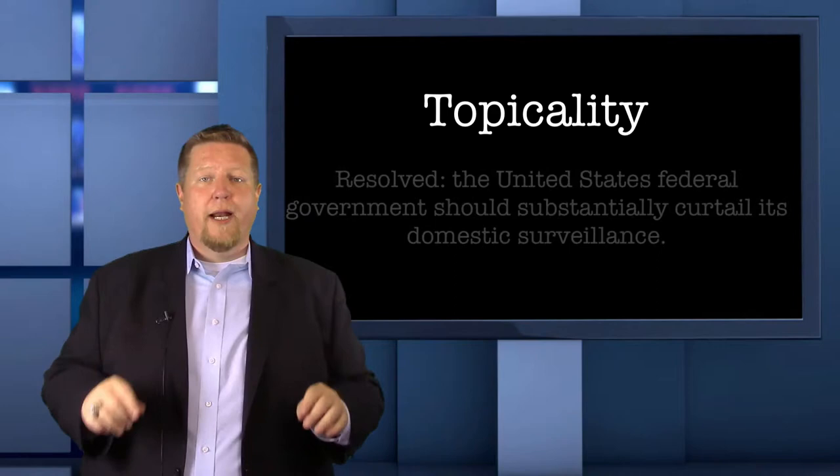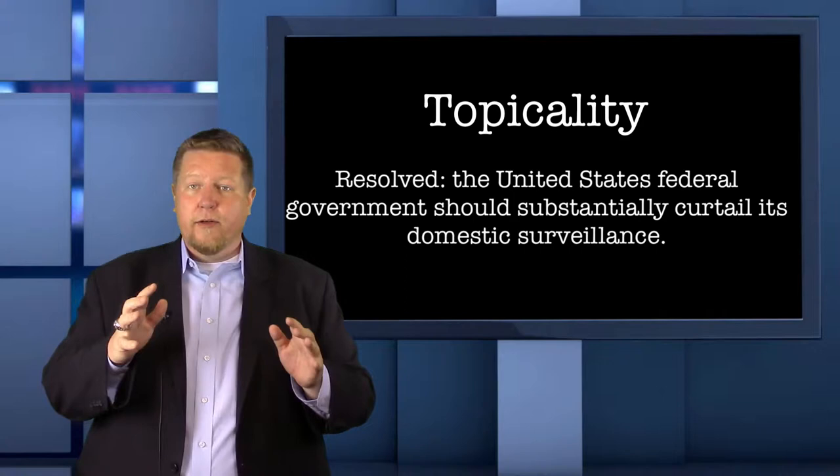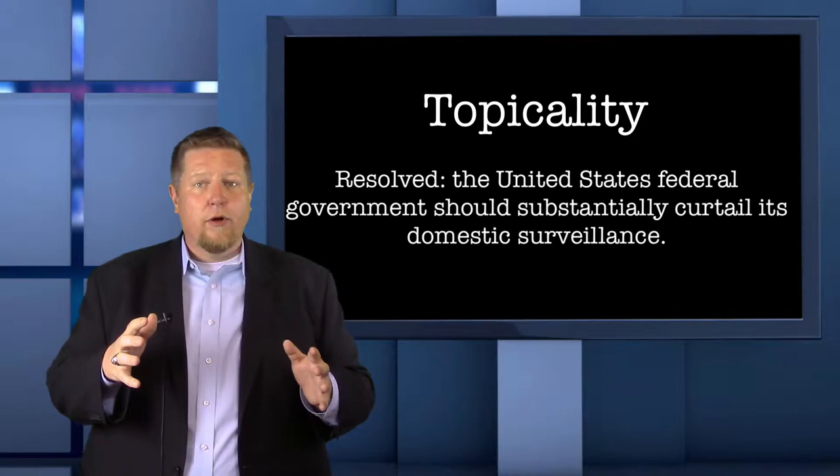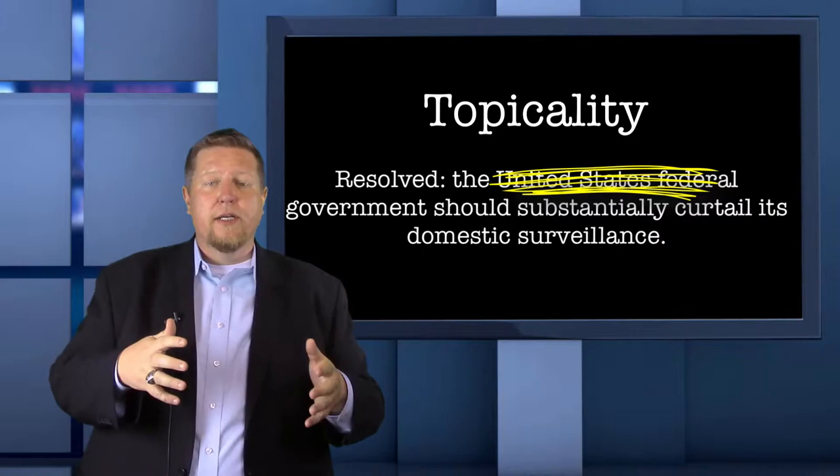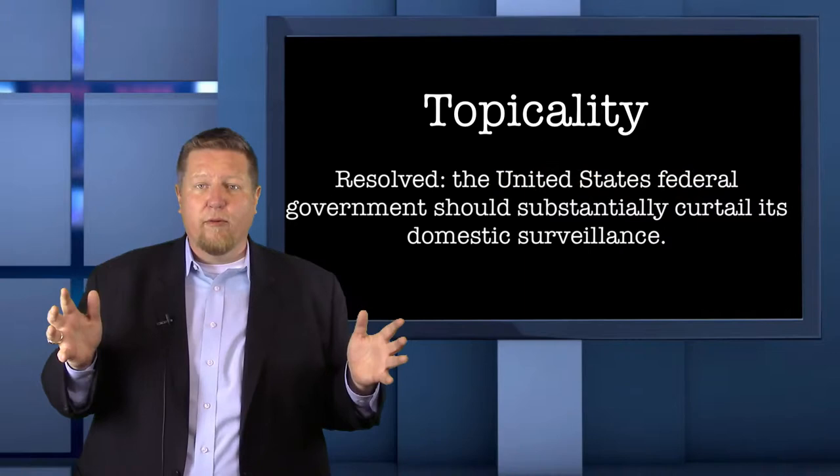So how do you know if a plan is topical or not? We'll start with the resolution: Resolved, the United States federal government should substantially curtail its domestic surveillance. An affirmative team needs to propose a plan that fits within that resolution. Our resolution has 11 words and each one limits the amount of affirmative ground. For example, if we took out the word 'federal' and just said 'the government,' that would open up affirmative ground for more cases that involve states or county governments.